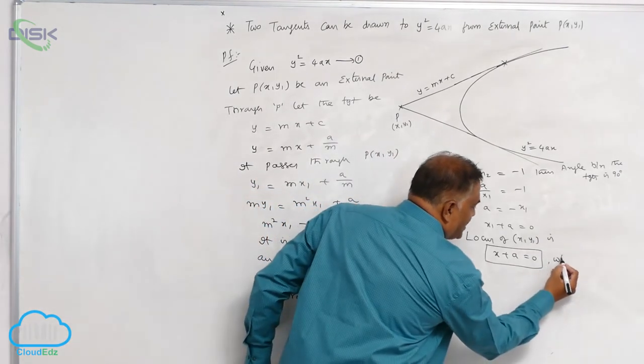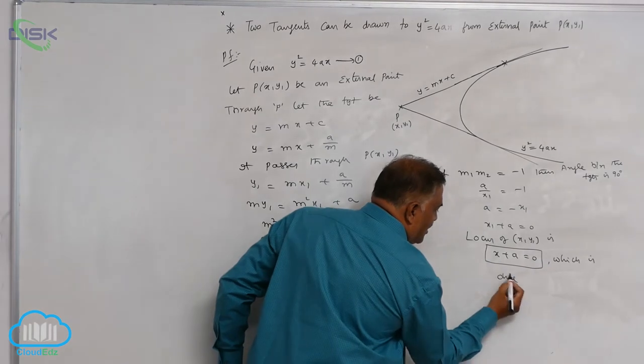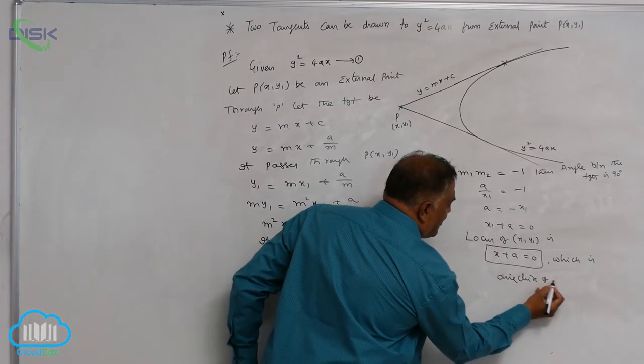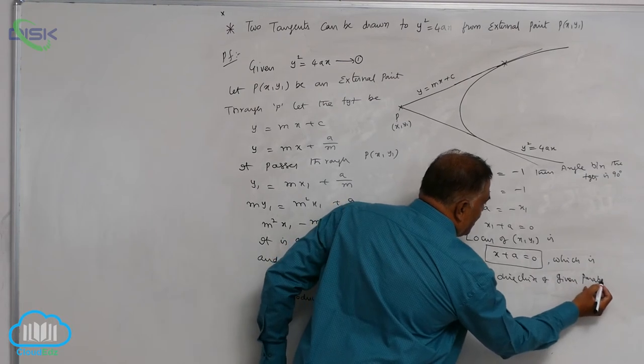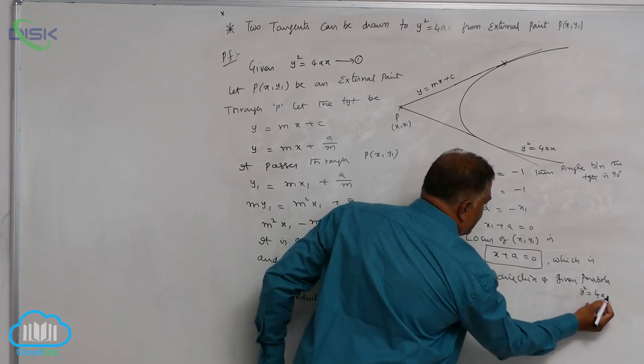Which is directrix of our given parabola, y square equal to 4ax.